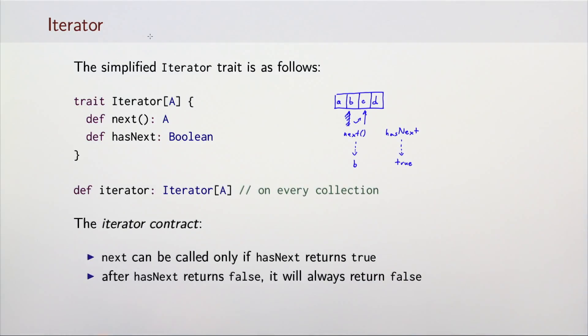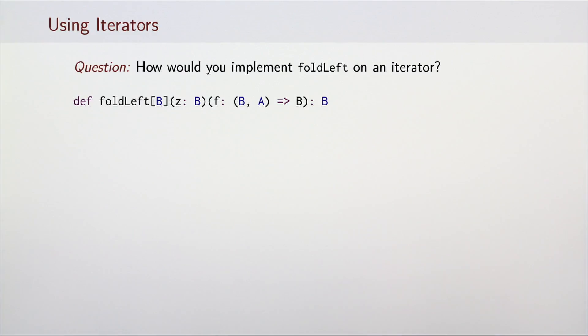The iterator contract states that next can only be called if hasNext returns true. That means that users of the iterator should almost always call hasNext before pulling out the element with next. Here is an exercise. Try to extend the iterator trait with the foldLeft method. This foldLeft method should be an operation on the iterator trait, not the collection. Take some time to implement this method.